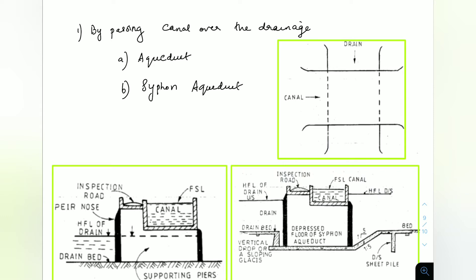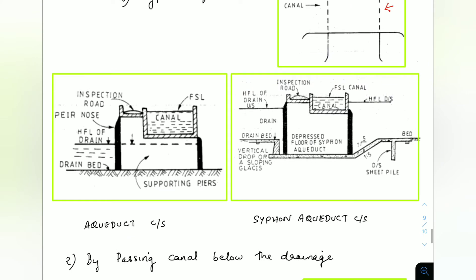Let's start with the first way — passing the canal over the drainage. The dotted line represents that the drain is below the canal. Here we can provide this in two ways: aqueduct and siphon aqueduct. In an aqueduct, the high flood level (HFL) of the drain is below the canal bed. In a siphon aqueduct, the HFL of the drain is above the canal bed level, the floor is depressed, and the water flows by siphonic action in the drain.